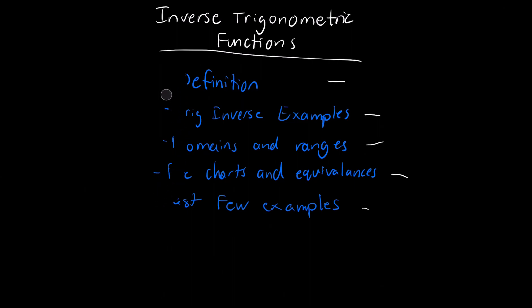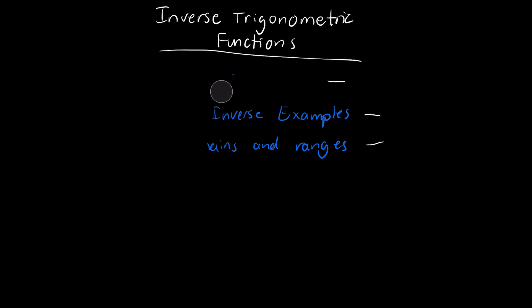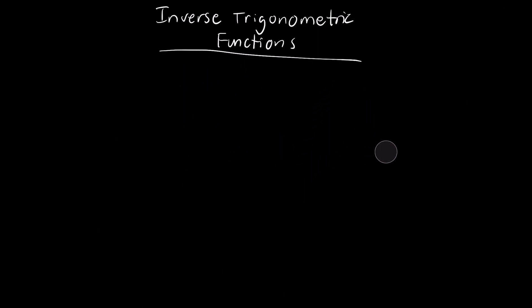Inverse functions undo anything that is operating on x in the original function, and they can be used in a variety of different ways. Let's start with a simple example: the function f(x) equals square root of x. The inverse of this would be f inverse of x equals x squared, because x squared undoes the square root of x.